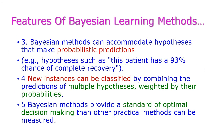The third feature is that Bayesian methods can accommodate hypotheses that make probabilistic predictions — for example, a patient has a 93% chance of complete recovery, or a student has an 85% chance of passing in the forthcoming university examination. Likewise, we can generate hypotheses using Bayesian methods, and new instances can be classified by combining the predictions of multiple hypotheses.